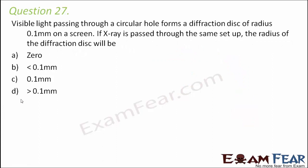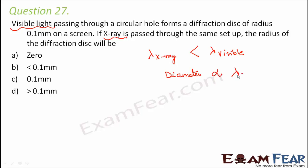Question number 27. Visible light passing through a circular hole forms a diffraction disk of radius 0.1 mm on a screen. If x-ray is passed through the same setup, the radius of the diffraction disk will be? Here we compare two types of light: visible light and x-ray. The key difference is wavelength — the x-ray's wavelength is less than that of visible light. Since the diameter of the diffraction disk is proportional to the wavelength, and the wavelength of x-ray is smaller, the radius of the x-ray diffraction disk will be less than 0.1 mm. So option B is the correct answer.